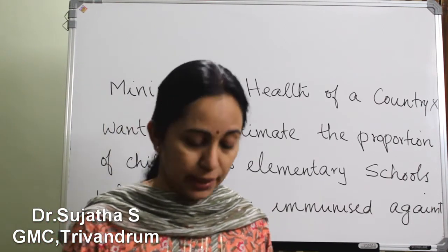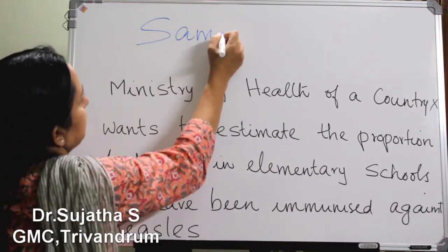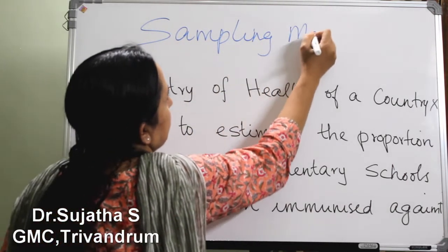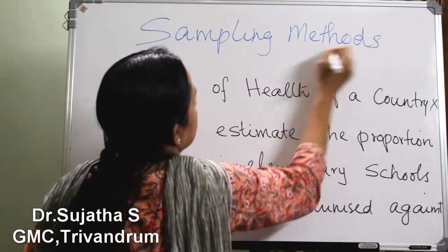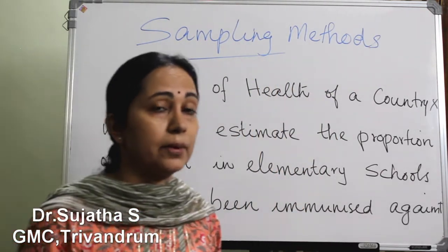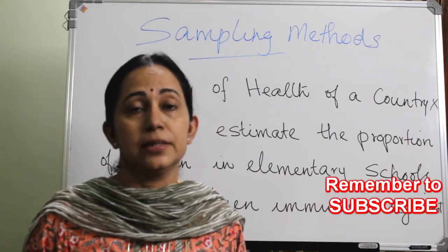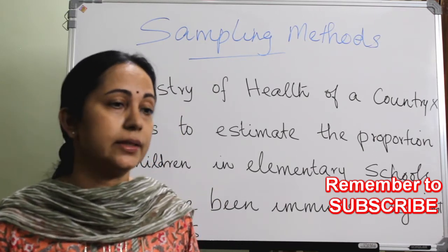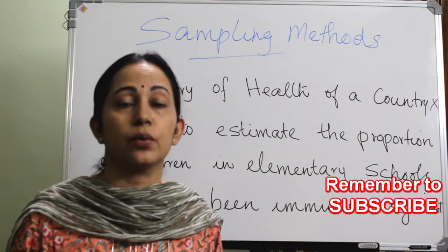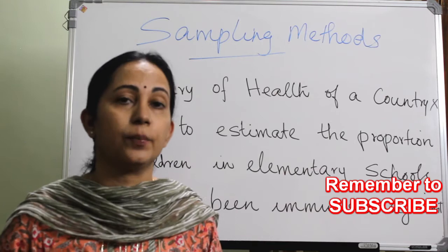In this class, I will tell you about the various sampling methods — probability sampling, non-probability sampling — and the advantages and disadvantages of each. What is sampling? Sampling can be defined as a procedure by which some members of the population are selected as representatives of the entire population.